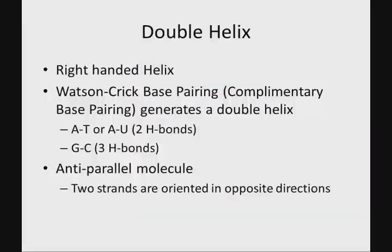The double helix is described as a right-handed helix. Watson-Crick base pairing — also called complementary base pairing — means A's go with T's and G's go with C's, held together through hydrogen bonds to form the double helix. A's and T's (or A's and U's in RNA) have two hydrogen bonds between them, while G's and C's have three. The more bonds you have, the harder it is to pull those strands apart — and this will play a role when using PCR to amplify DNA and when considering melting temperature between strands.